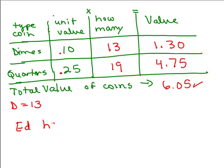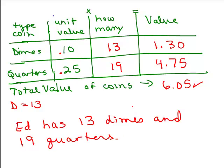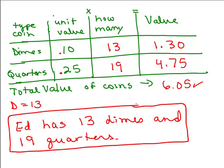It asked how many of each. Ed has 13 dimes and 19 quarters. If it just asked us for how many quarters, we would just say, oh, he has 19 quarters. If it asked us for the number of dimes, we would say we have 13 dimes. We have to remember we're going to answer the question from the original problem.